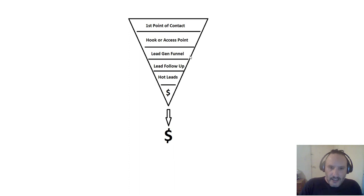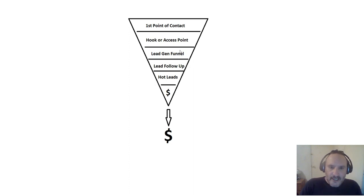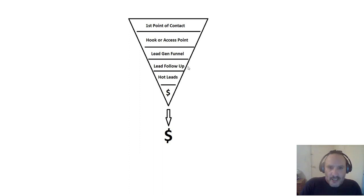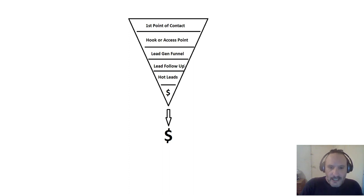Once they reach layer three, they go to your opt-in page, download your lead magnet, and enter their email — now you have a lead. You can follow up with that lead and they're one step closer to buying. The lead generation funnel takes them to an opt-in page, then a thank-you page where you can upsell the product and potentially get a sale right at layer three. But it doesn't always happen there, so that's why we have layers four and five for people who need more convincing.